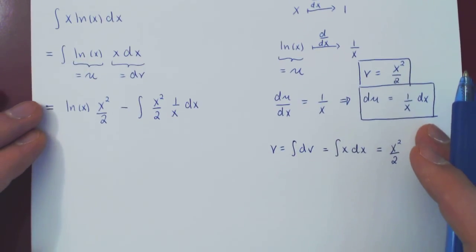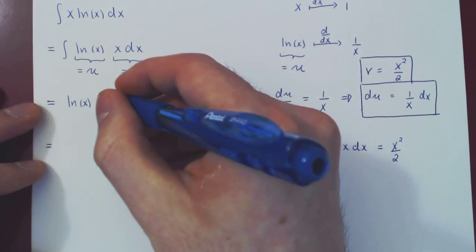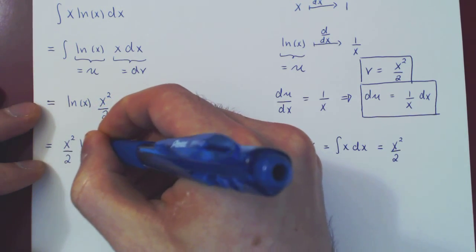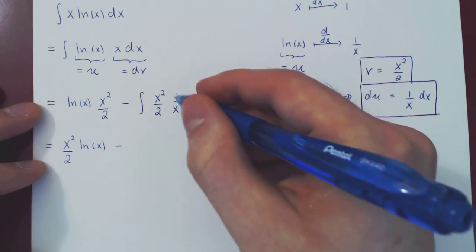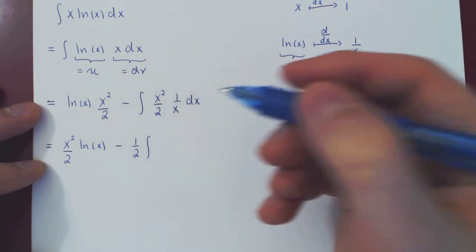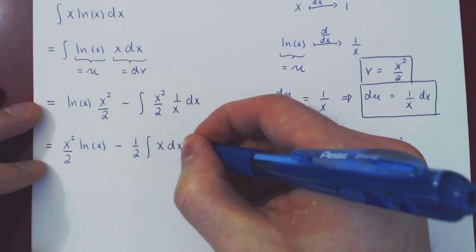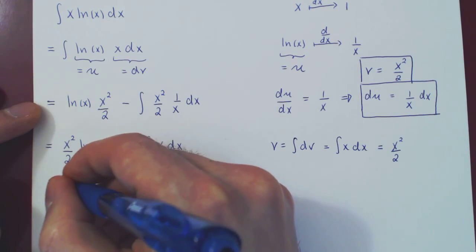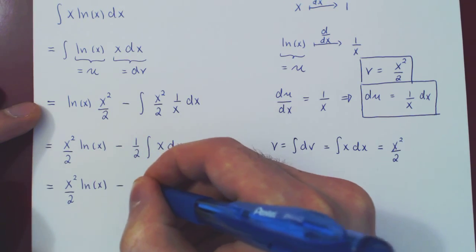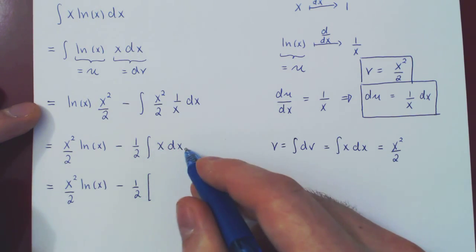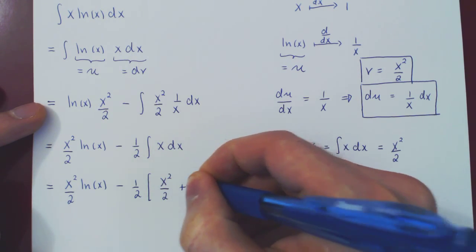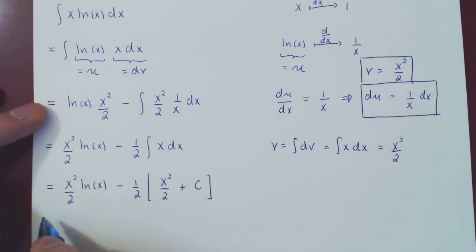I'll write the x squared over 2 first. So x squared over 2 ln of x, minus the 1 half I'll pull out as a constant multiple. And of course, x squared over x is simply x. And so we get the integral of x dx. So x squared over 2 ln of x, minus 1 half. And the integral of x dx is very simple. Power rule, x squared over 2, plus the constant of integration. And now we're basically done, although this looks a bit silly. Let's multiply through and simplify a little bit.